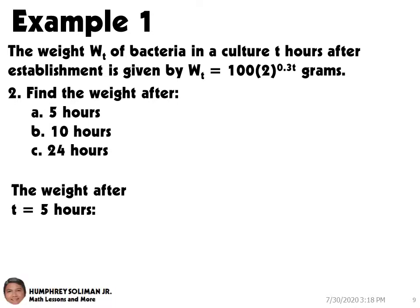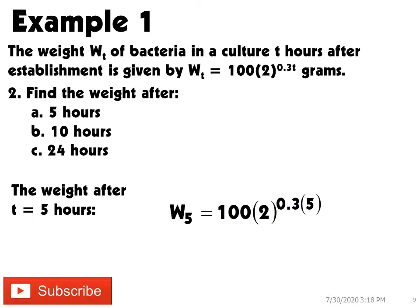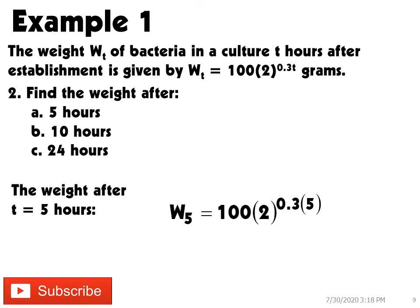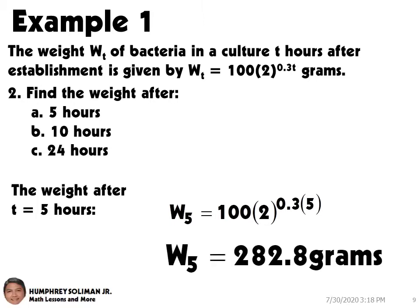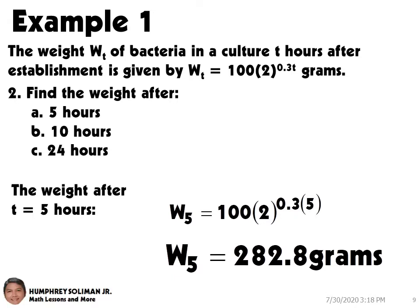If we substitute t equals 5 in the equation used to model the weight of the bacteria, we will get W5 equals 100 times 2 raised to 0.3 times 5. Therefore, the weight after 5 hours is W5 equals 282.8 grams.